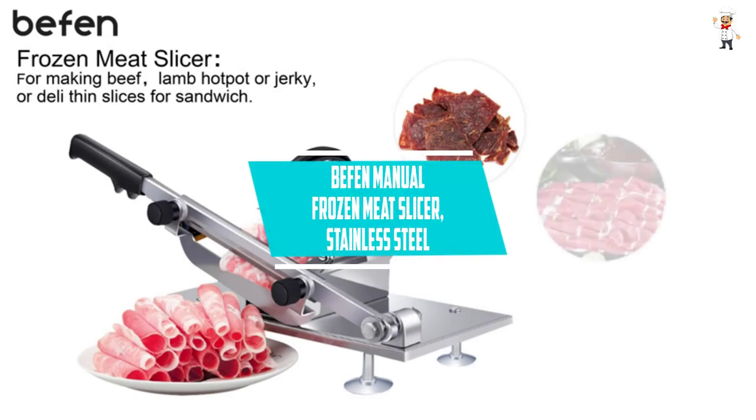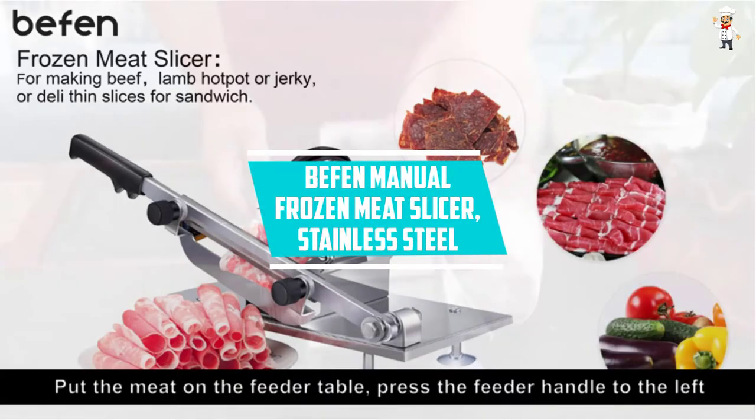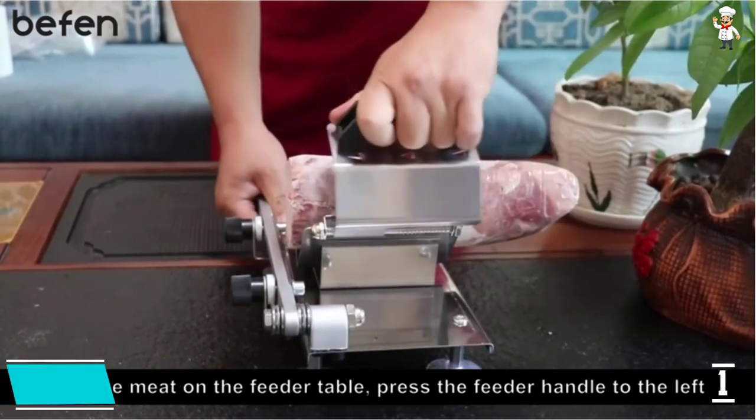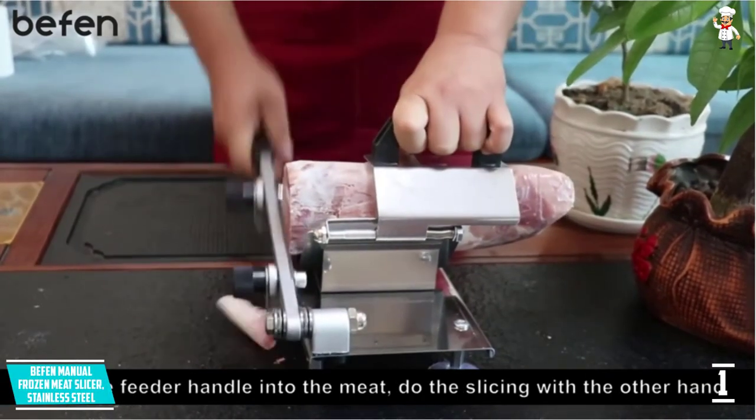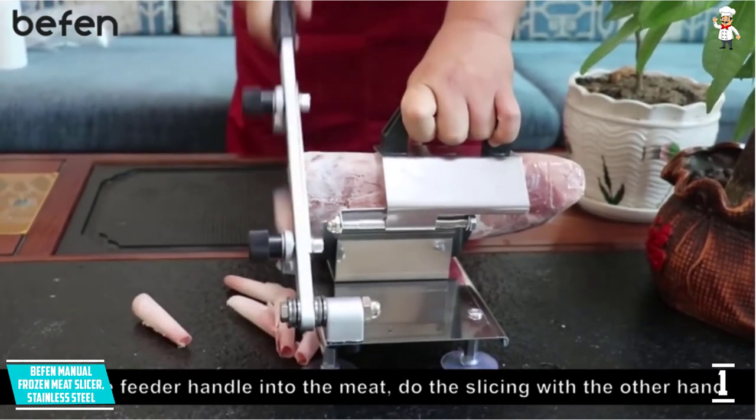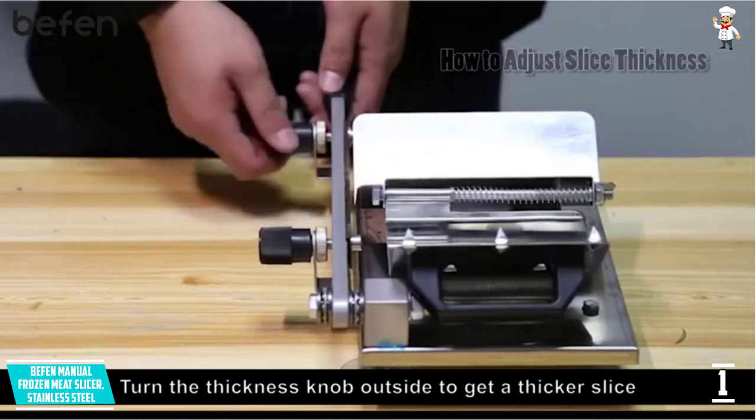At number 1, Beffin Manual Frozen Meat Slicer, Stainless Steel. This frozen meat slicer will make one of the time-consuming kitchen chores, which is food prep, very easy and time-saving. It has a wide range of uses which means that it will be ideal for different types of meat including chicken and ham.